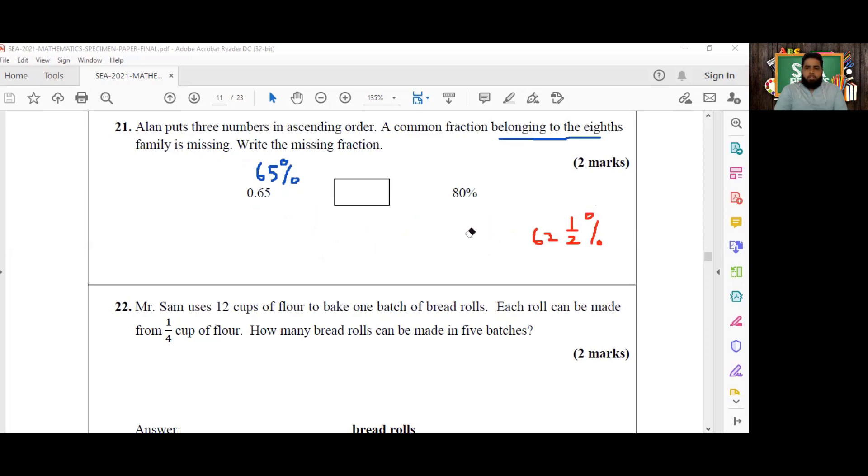So it can't come between 65% and 80%. So we'll test our next common fraction in the eighths, and that is going to be six eighths. Now six eighths can be reduced to three quarters. So we'll say four into four is one, four into 100 is 25, and we're going to get 75%. So 75% falls nicely between 65% and 80%. Therefore, the common fraction that is missing here is six eighths, and we're going to write six over eight.